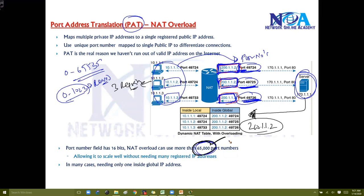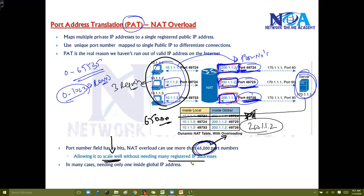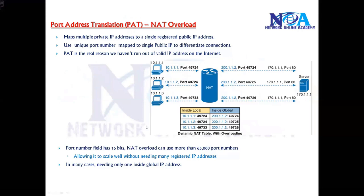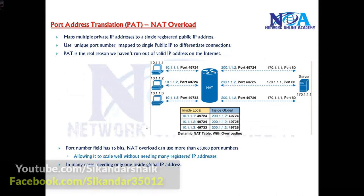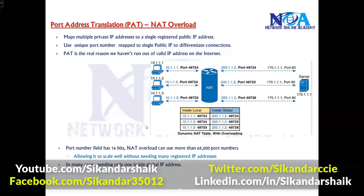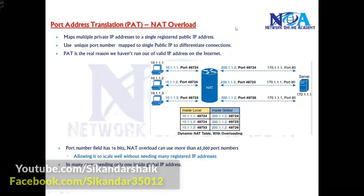Logically you can have around 65,000 port numbers, which means you can allow approximately 65,000 users to access the internet with only one single public IP. This scales very well without needing many public IPs. In most cases we use only one global public IP. So in production, PAT is used for general internet access, and if you're hosting servers, static NAT is also used. In terms of configuration, we'll look at all three types of NAT — their configuration and verification examples.